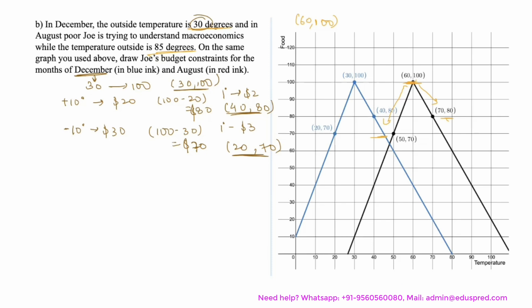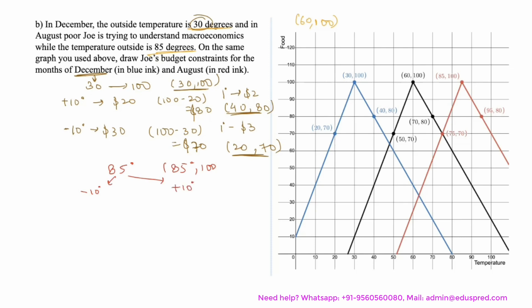Now let's repeat the same exercise for August. In August, the temperature outside is 85 degrees, so the starting point is (85, 100). You can either draw a parallel inverted V line from (85, 100), or do the math again. Reducing the temperature by 10 degrees reaches 75 degrees at a cost of $30, leaving $70 for food — giving the point (75, 70).